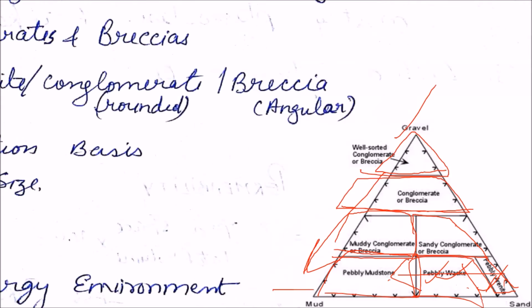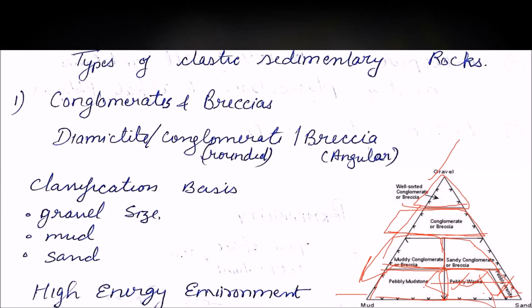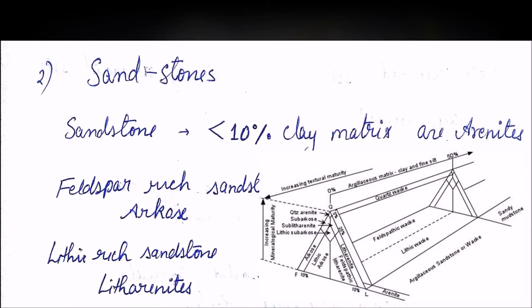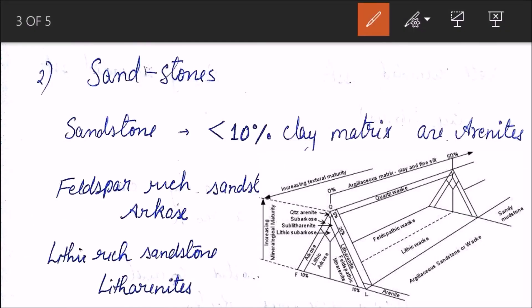Next we have the sandstone. This is a very important classification. In sandstone, first three things we need to understand: if there is less than 10 percent of clay matrix, they are called arenites. Arena is just a Spanish word for sand, so arenites comes from arena.